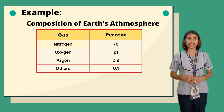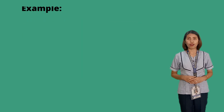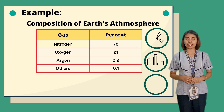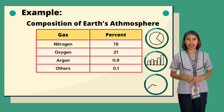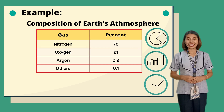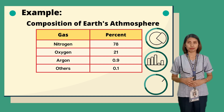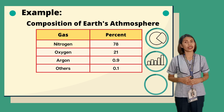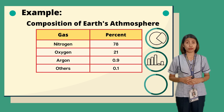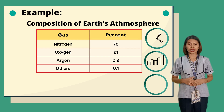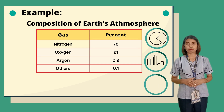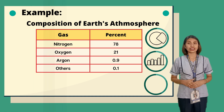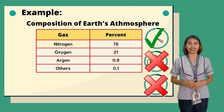Problem number three: the table shows the composition of Earth's atmosphere. What graph would best represent the composition of the Earth's atmosphere? The word 'composition' indicates we are looking at parts of a whole. The Earth's atmosphere is the whole, which is 100%, and each gas is a part of that whole. Accordingly, a pie chart is the best choice for summarizing this data.